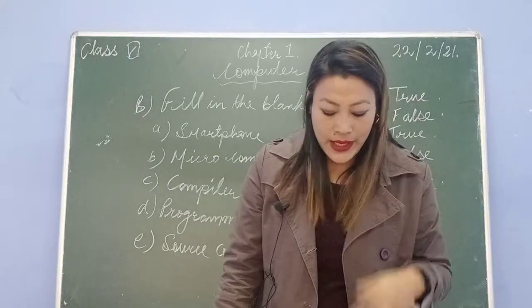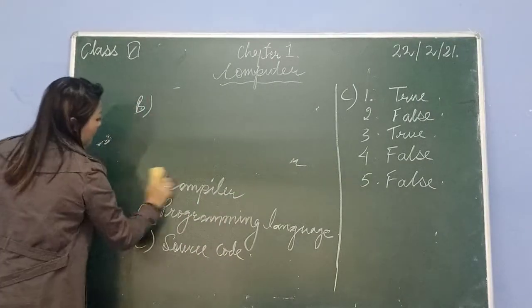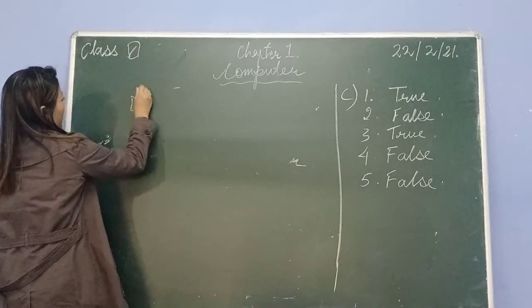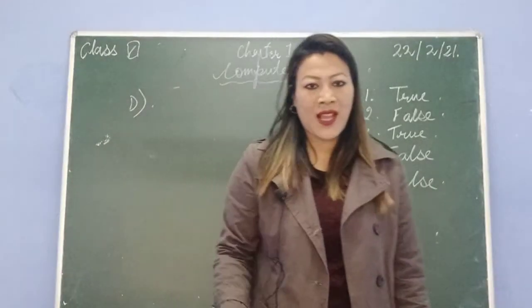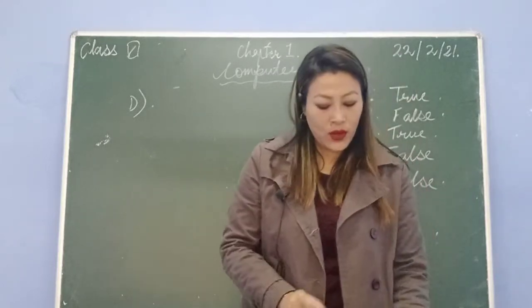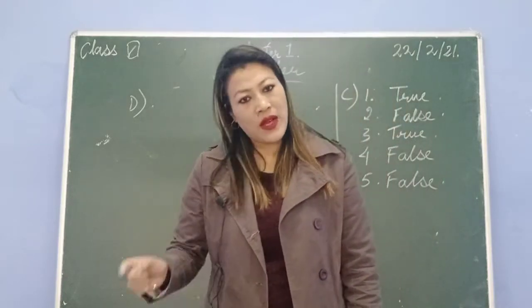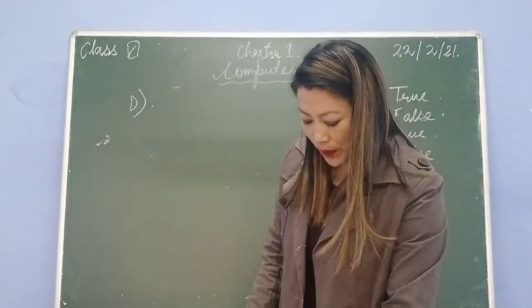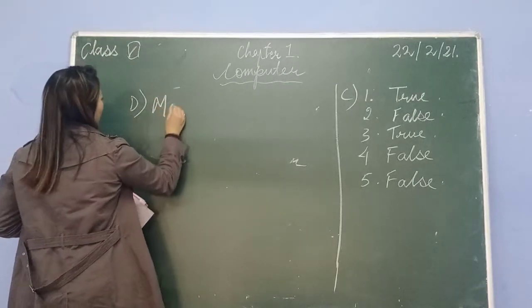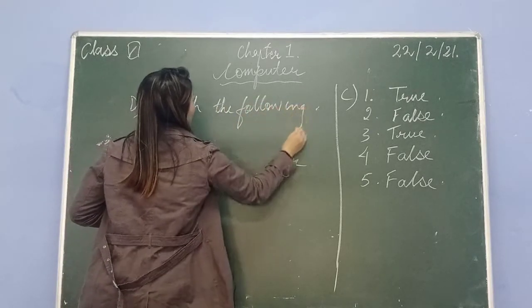Now comes section D - match the following. Children, when you are doing these exercises in your computer copy, make sure you write the questions and all the options, and only then write the answers given by me. Here I am just writing the answers, but you have to write the questions and answers at the same time. Just do not copy the answers only.